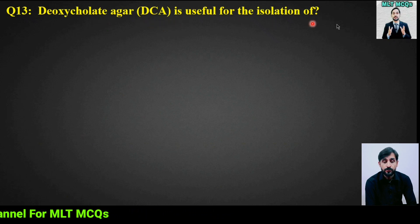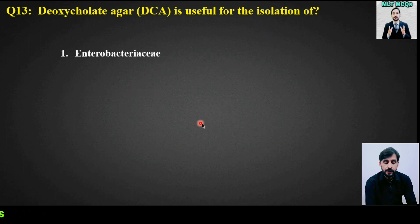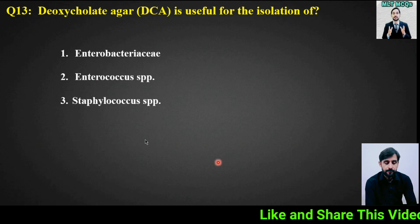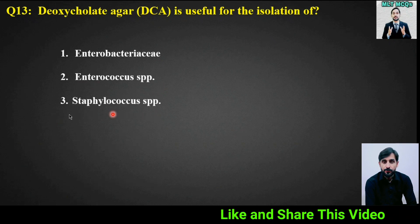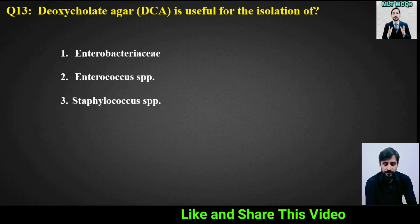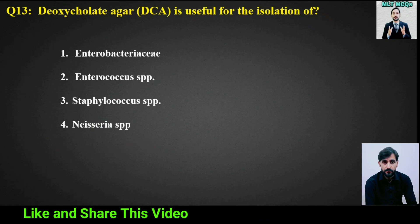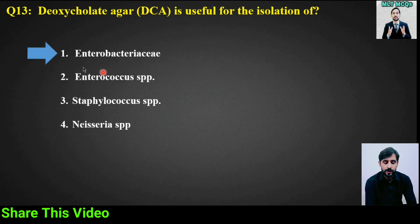MCQ number 13: Deoxycholate agar (DCA) is useful for the isolation of — options: Enterobacteriaceae, Enterococcus species, Staphylococcus species, or Neisseria species. The right answer is option 1: Enterobacteriaceae.